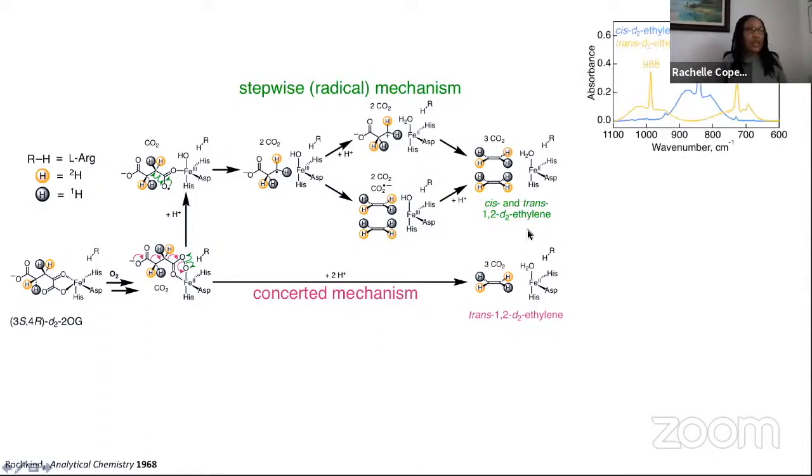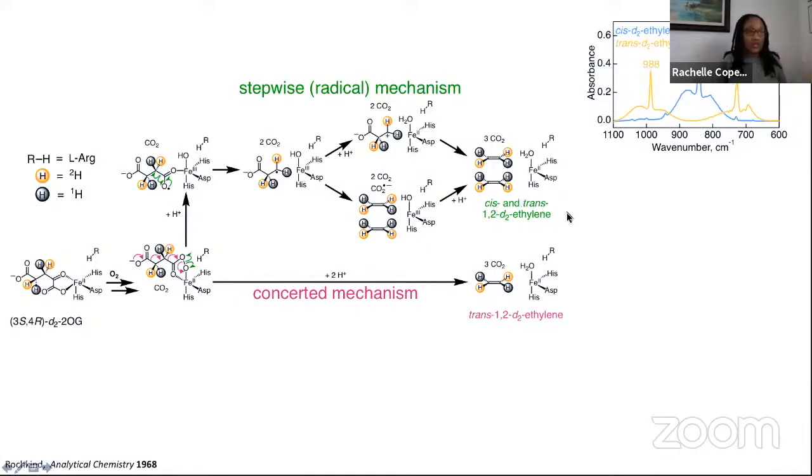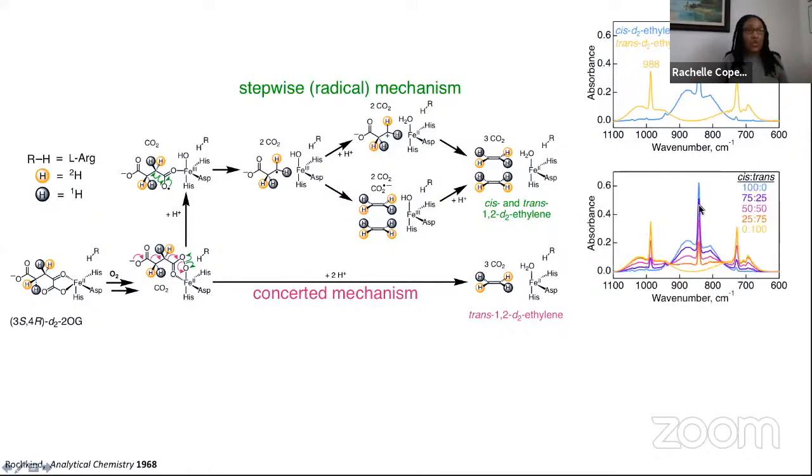Cis and trans-ethylene can be distinguished using IR spectroscopy. Cis has a major peak at 842 wavenumbers, whereas trans has peaks at 988 and 727. Since we were anticipating the possibility of a mixture, we also looked at changes in the spectra as you go from predominantly cis to predominantly trans. As expected, we see a decrease in intensity at 842 and an increase in intensity at 988 and 727 as we go from completely cis to completely trans.